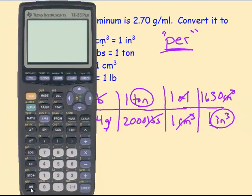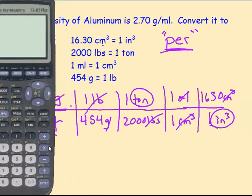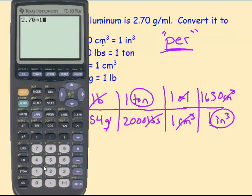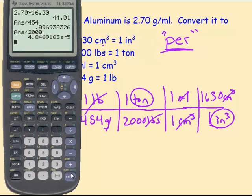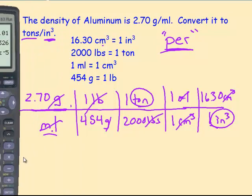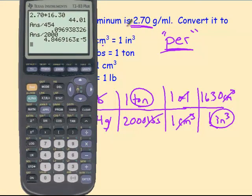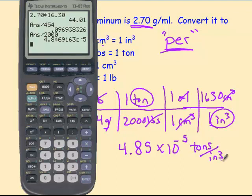So I'm going to multiply 2.70 times 16.30. And I get that across the top. Now remember how I like to solve these is divide by each of the bottom ones and hit equals. So divided by 454 equals. Divided by 2,000 equals. So my correct answer, notice it automatically cleared in scientific notation. Three significant digits because that's what I have in my original number. 4.8 rounds to 5 times 10 to the minus fifth tons per cubic inch.